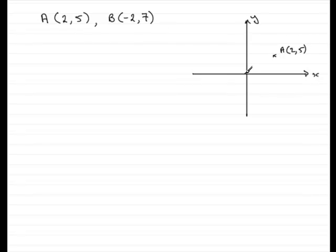B is the point minus 2, 7, so we can say that that's the point B at minus 2, 7. And we're out to find this distance across here.